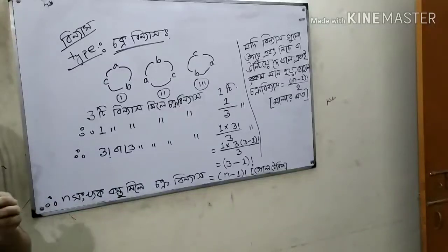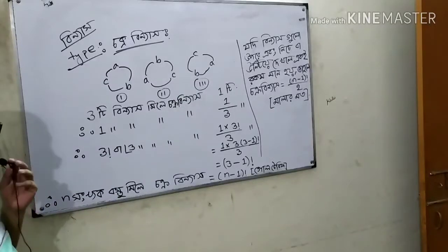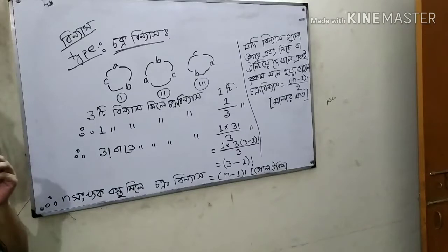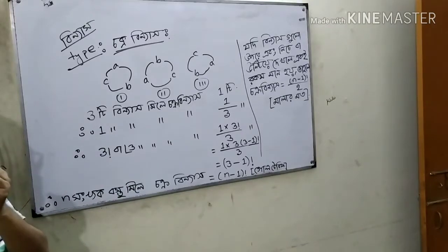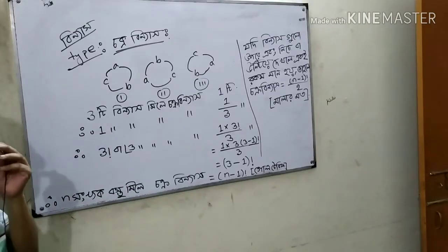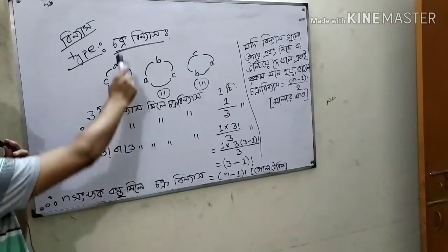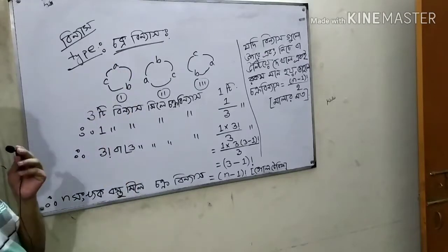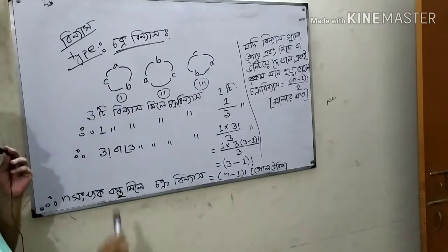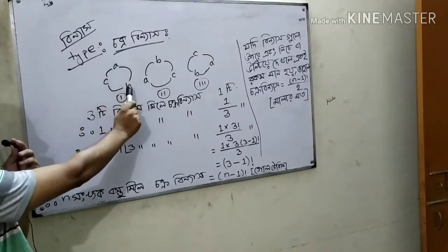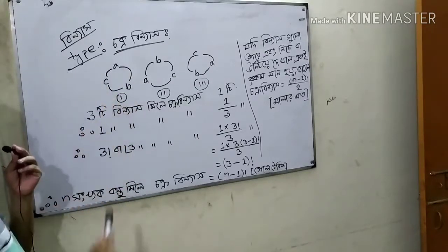What is your name? First of all, if you have a type, you can use a type of type. You can use A, B, C.